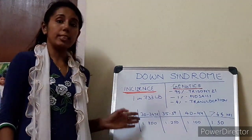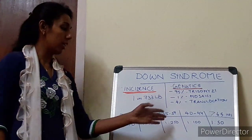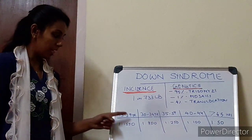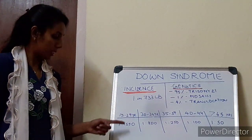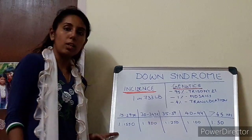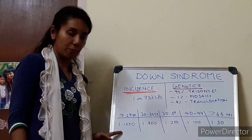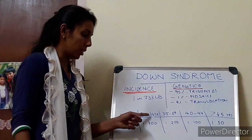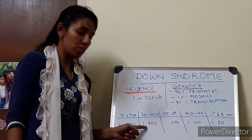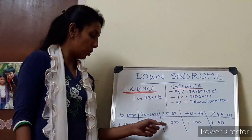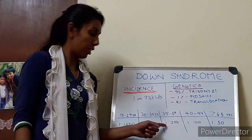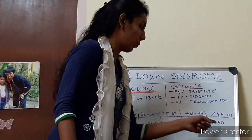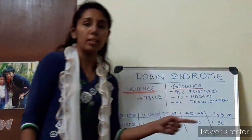If you actually see the age-wise difference in the incidence of Down syndrome: in the age group of 15 to 29 years, the incidence is 1 in 1550. As the age progresses, in 30 to 34 it is 1 in 800, 35 to 39 it is 1 in 250, 40 to 44 it is 1 in 100, and more than 45 years it is 1 in 50.